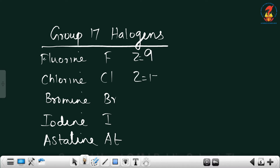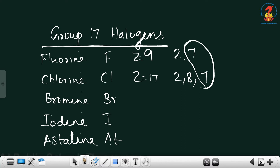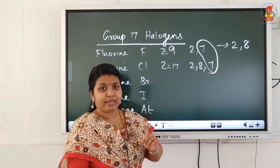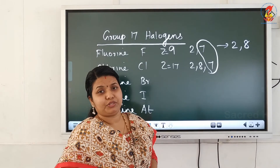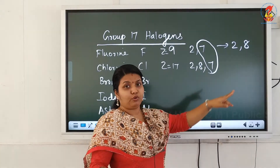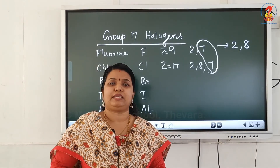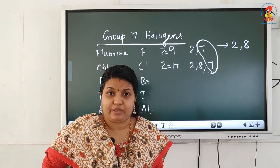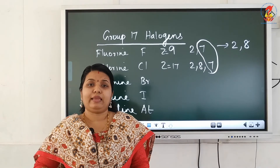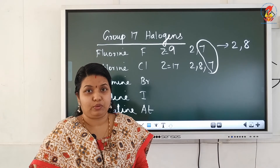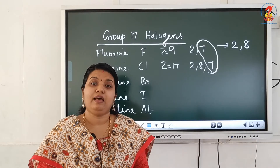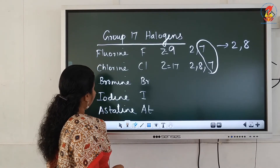Fluorine has atomic number 9 with electronic configuration 2,7; chlorine has atomic number 17 with configuration 2,8,7. They have the same number of valence electrons — 7. To attain stability, fluorine needs the configuration of neon (2,8), and chlorine needs 2,8,8, so each gains 1 electron and their valency is 1. All elements of group 17 have 7 electrons in the valence shell, valency 1. The elements are fluorine, chlorine, bromine, iodine, and astatine.